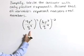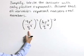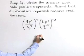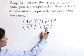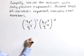Here we have the expression where we have a quantity, 4p squared over q to the fourth, all raised to the third power, times 6p to the eighth over q to the negative eighth, all raised to the negative two power.